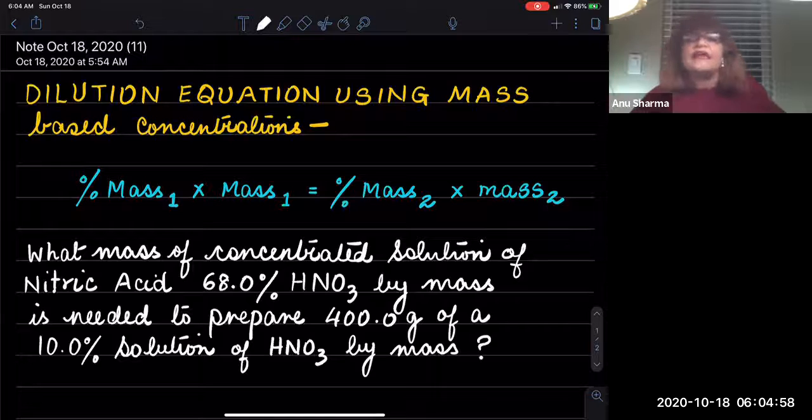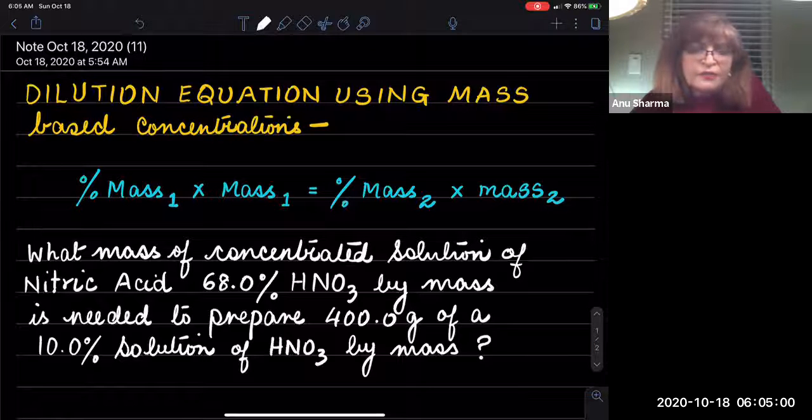So this is an example of a problem: what mass of concentrated solution of nitric acid 68% HNO₃ by mass is needed to prepare 400 grams of a 10% solution of HNO₃ by mass? So how do we do this?